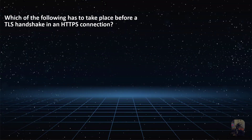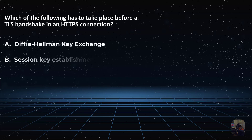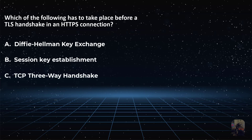Which of the following has to take place before a TLS handshake in an HTTPS connection? Is it choice A, the Diffie-Hellman key exchange? Is it choice B, session key establishment? Or is it choice C, TCP three-way handshake? Or choice D, all of the above?